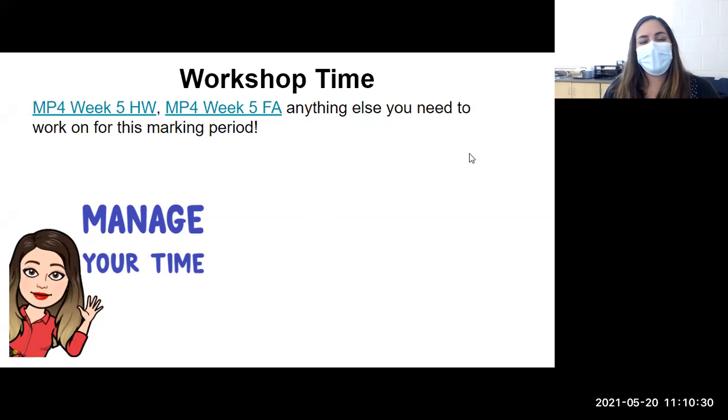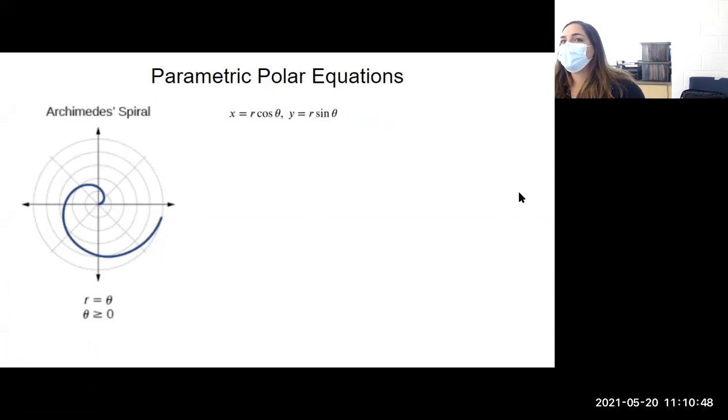So if you would please turn your attention to the zoom screen, if you're at home, or the Promethean board if you're in person, I just want to show you one quick, cute little thing that if you go on to higher levels of math, like past AP Calc AB, it will be kind of useful for you to have this in the back of your mind. So we talked about that Archimedes spiral. We had R equals theta, theta is greater than or equal to zero. And this is what that graph looked like. Your radius is the same as your angle.